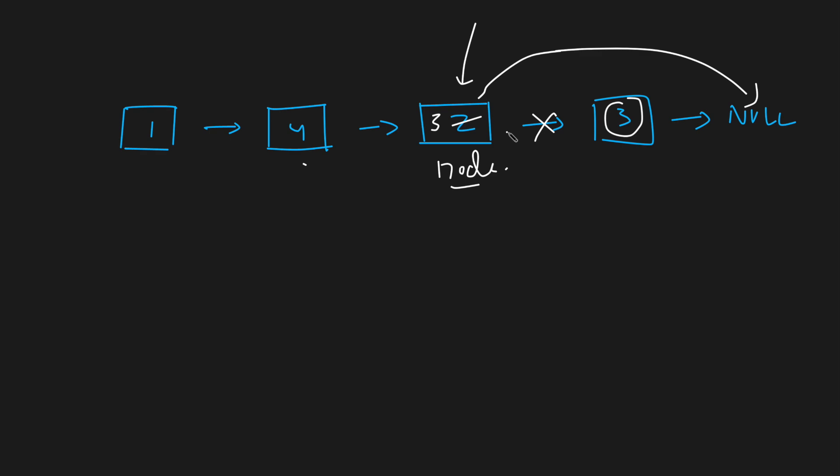So you did not delete the node but what you did was you actually deleted the value. Since you are storing integers or double or something, you were able to replace your value. That is 1, 4, 3, null is your new linked list.